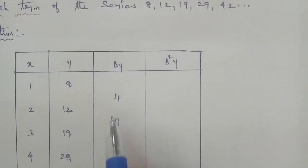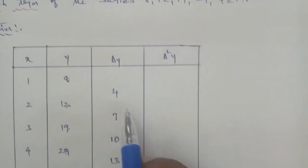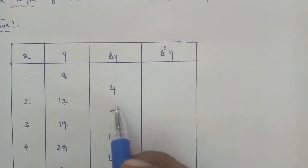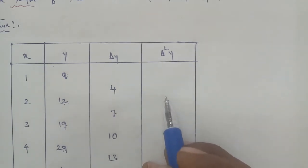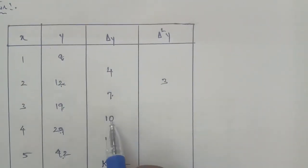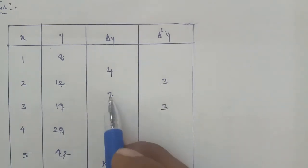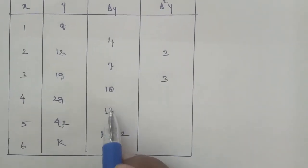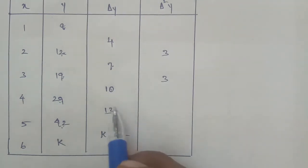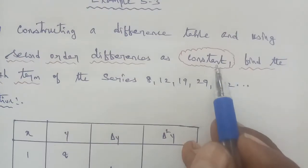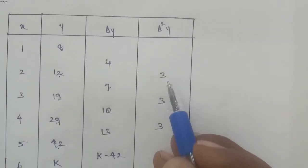Now we compute the second differences (delta squared Y) by applying the forward difference again. 7 minus 4 equals 3. 10 minus 7 equals 3. 13 minus 10 equals 3. So the second differences are all 3, 3, 3 — they are constant.